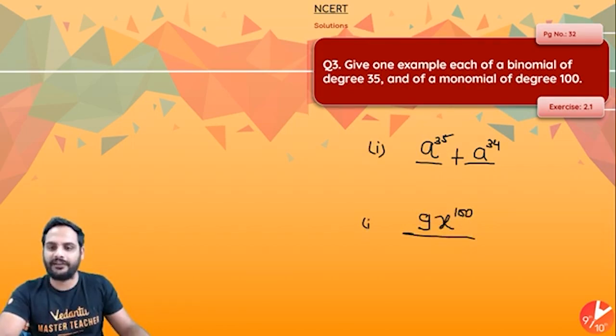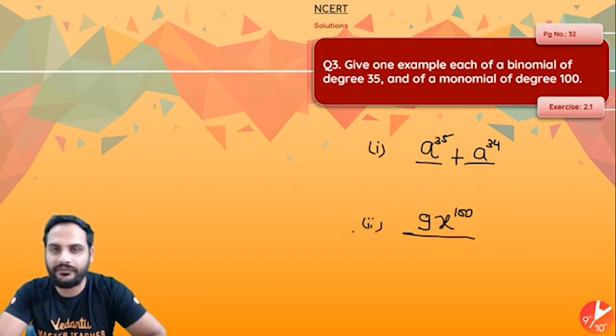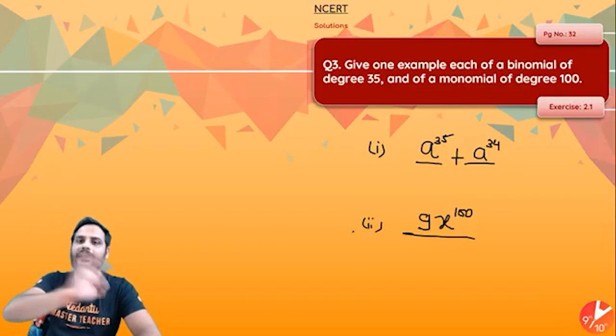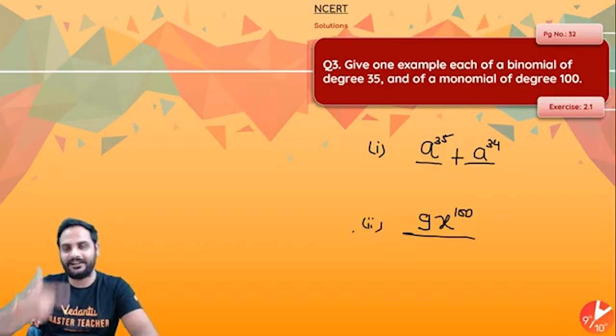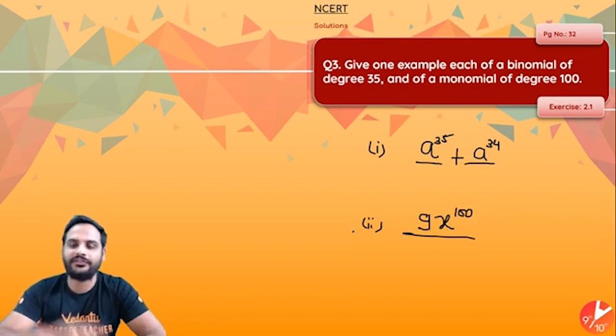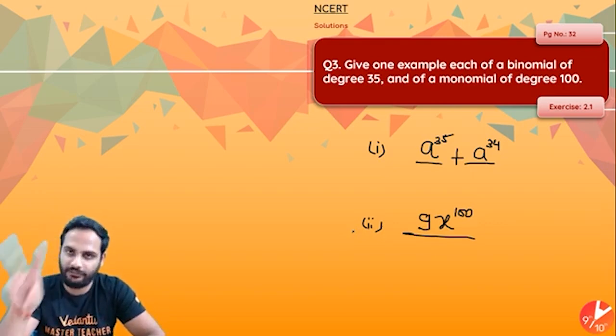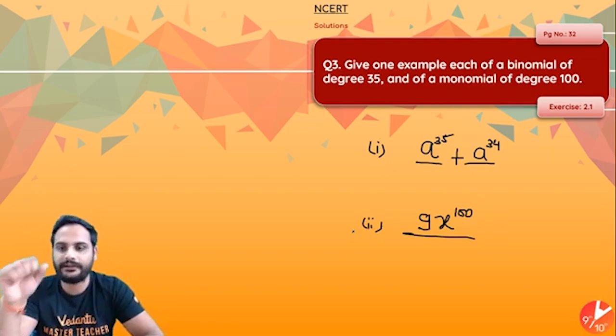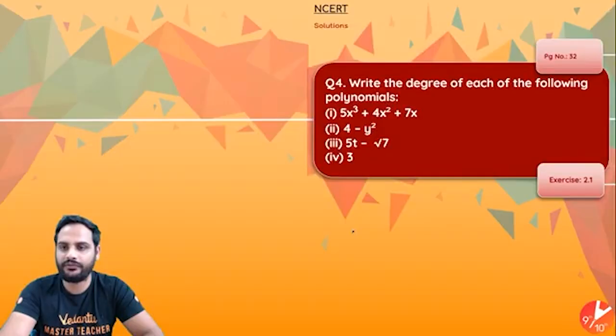First part: binomial of degree 35. Second thing: monomial of degree 100. There are infinite different answers for this one. Just make sure the binomial degree should be 35, there should be two unlike terms, and the second one has only one term with power 100.